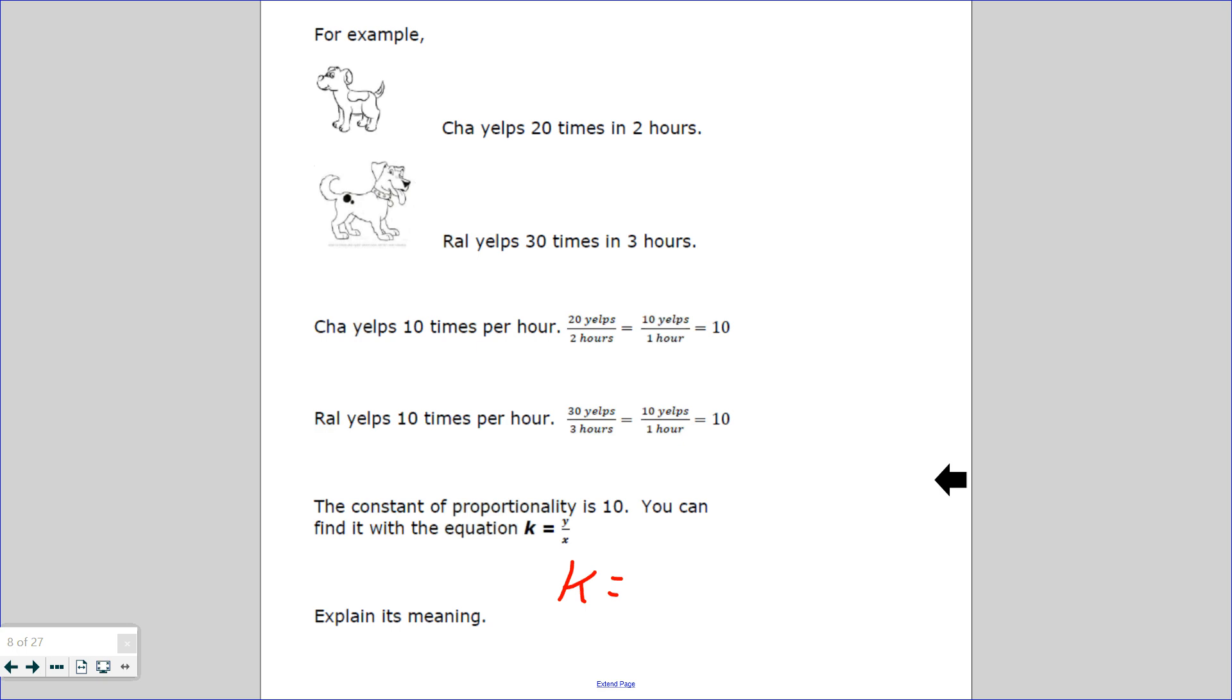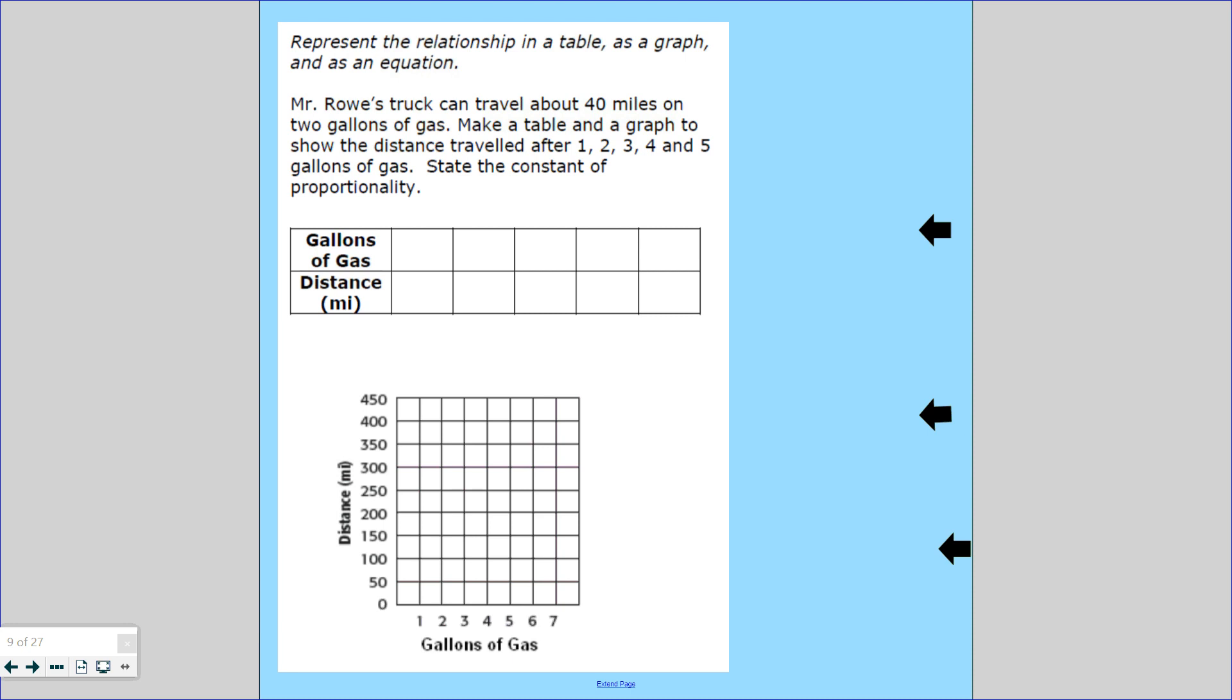So the constant of proportionality is 10. How can I get it? I divide y, which is 20, and x is 2. The number of times depends on the hours, and that's where I get 10 from. So what we're going to do is you're going to be doing two examples now to practice what we just learned. Mr. Routh's truck can travel about 40 miles on 2 gallons of gas.